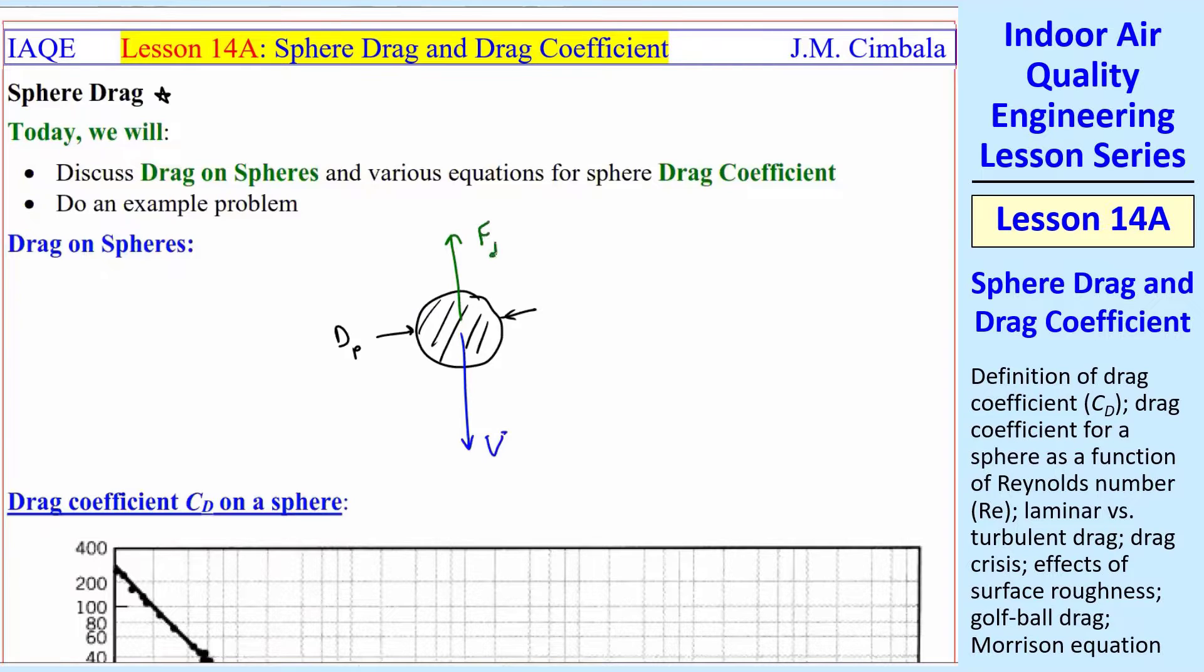There's going to be a drag force on this guy, and we'll call that f sub drag. And as you hopefully remember from your fluids class, this is equal to one half rho v squared times the drag coefficient times a. We are going to modify this a little bit when we get to really tiny particles, but for now, let's just use this.